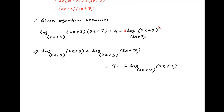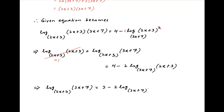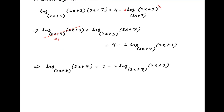Now on the left hand side the first term is equal to 1, and therefore this equation becomes log of (3x plus 7) to the base (2x plus 3) is equal to 3 minus log of (2x plus 3) to the base (3x plus 7). Notice that using properties of logarithms, log of (2x plus 3) to the base (3x plus 7) is equal to 1 over log of (3x plus 7) to the base (2x plus 3).